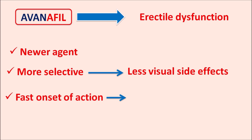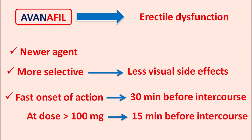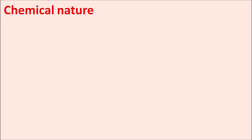This drug can be given 30 minutes before intercourse. When the dose is increased to greater than 100 mg, it can be given even 15 minutes before intercourse. In this way, the drug has a fast onset of action and can be given once daily. Because of its greater selectivity, it shows fewer visual side effects.